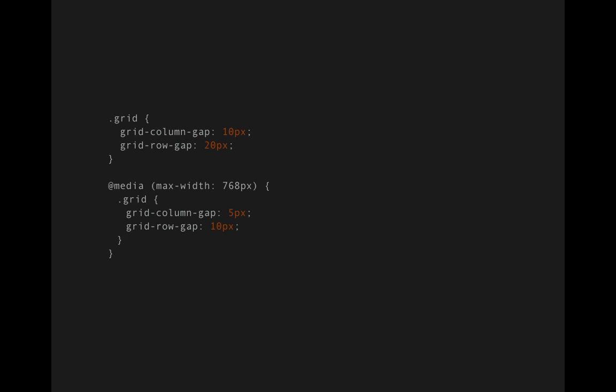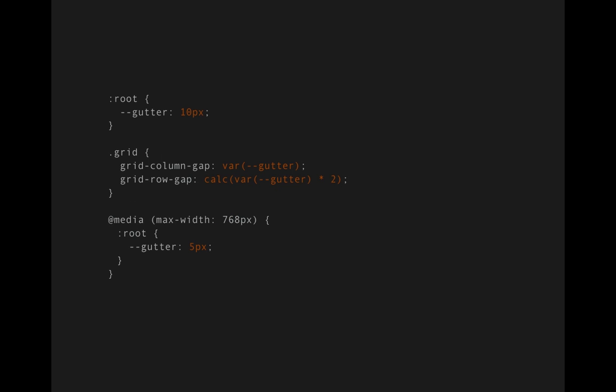Let me show a couple of examples. Say you have a grid with a column gap of 10 pixels and a row gap double its size, and you want it to be smaller on smaller screens. Without variables, you put a media query and override the values by hand — it works but it's not maintainable and the values aren't reusable. With CSS variables, you set a global gutter variable to 10 pixels, use it for 'grid-column-gap', and use the calc function to multiply the gutter value for 'grid-row-gap'. Then on smaller screens, you just change the gutter variable in a media query and CSS takes care of everything else.